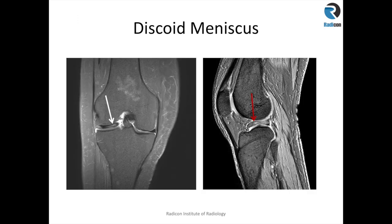Discoid meniscus is where the meniscus is quite thick, has an abnormal shape, and almost covers the whole width of the tibial condyle. The lateral meniscus is most commonly involved, and these tend to undergo early degeneration and can have tears due to altered biomechanics and abnormal stress. If the signal change is intrasubstance, label it as myxoid degeneration. If there is blunting, truncation, or the signal reaches the articular surface, describe it as a tear using the same nomenclature as for a normal meniscus.